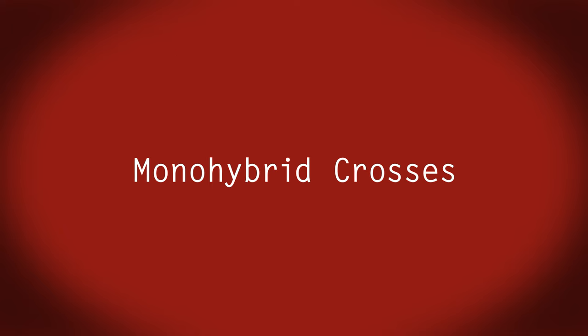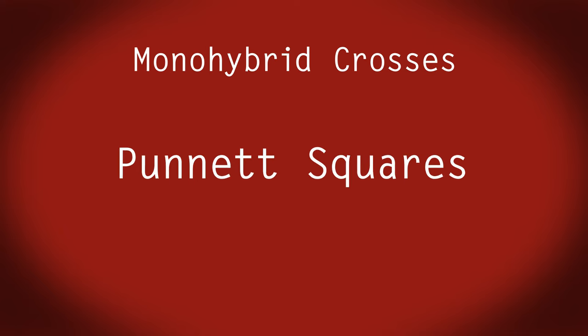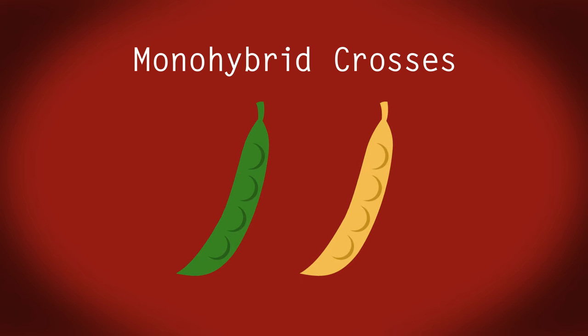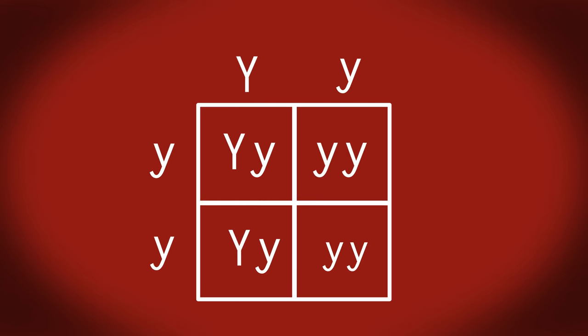In this video we are going to look at monohybrid crosses using Punnett squares. A monohybrid cross is the study of the inheritance of one characteristic such as the peapod colour. A Punnett square is a diagram that is used to predict the outcome of a particular cross.